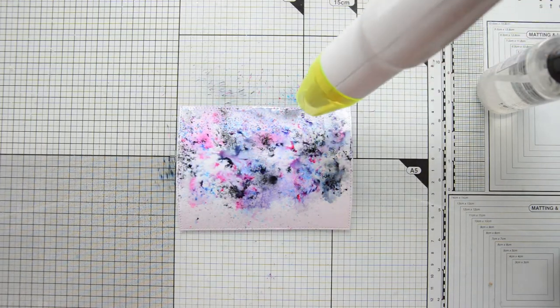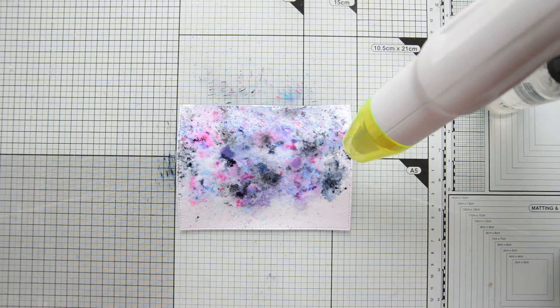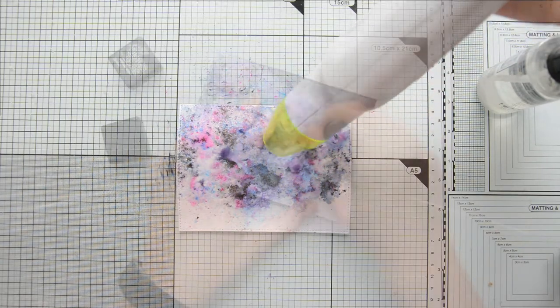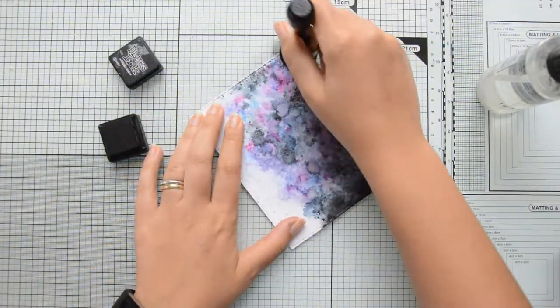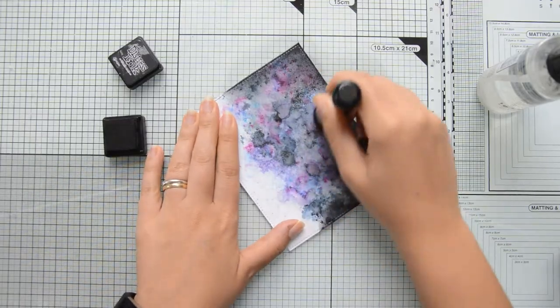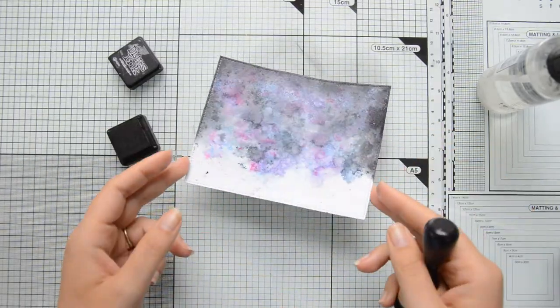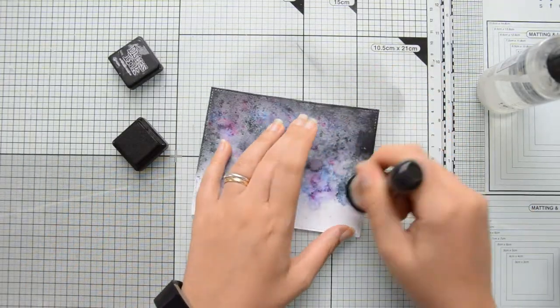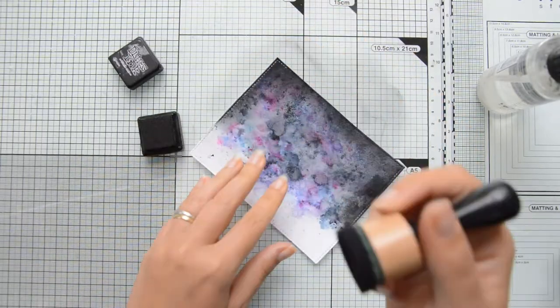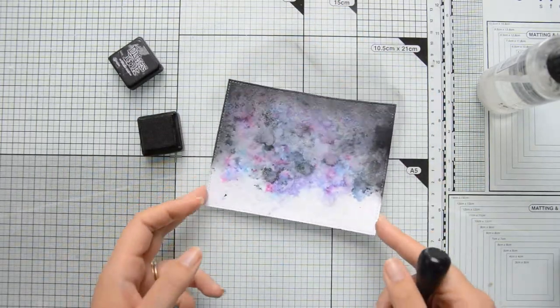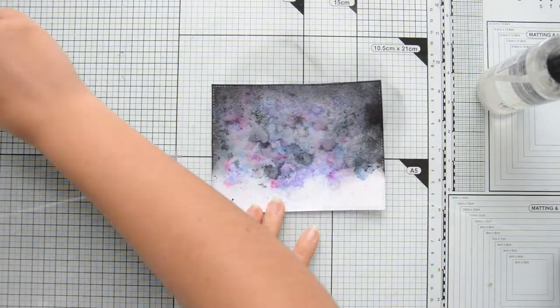I dried everything again with my heat gun, and once all the water was completely gone, I went in with my Black Soot Distress Ink and blended that pretty much over the entire area, focusing a little bit more on the edges to get a darker sky and to frame the sky a little bit too.